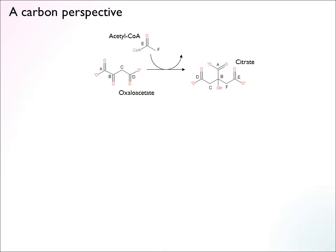The oxaloacetate carbons end up a bit jumbled — kind of backwards, going A, B, C, D in this direction. In the first cleavage step where we take off the first carbon dioxide, what gets cleaved off is part A, which came from oxaloacetate. The carbons from acetyl-CoA stay intact.